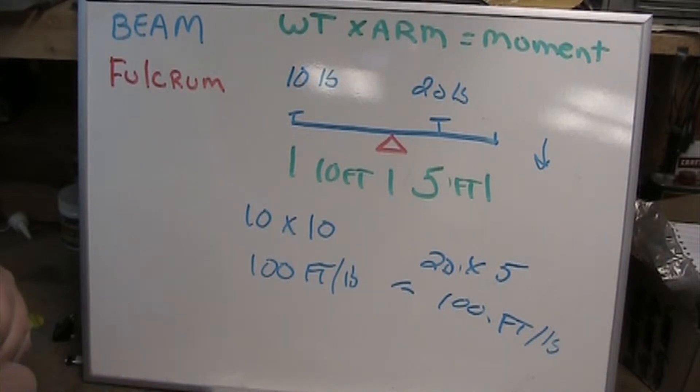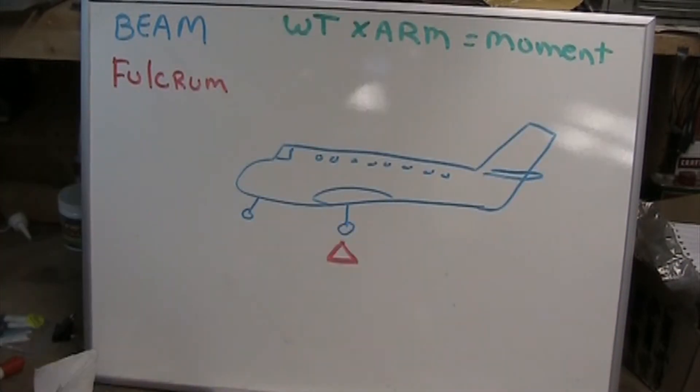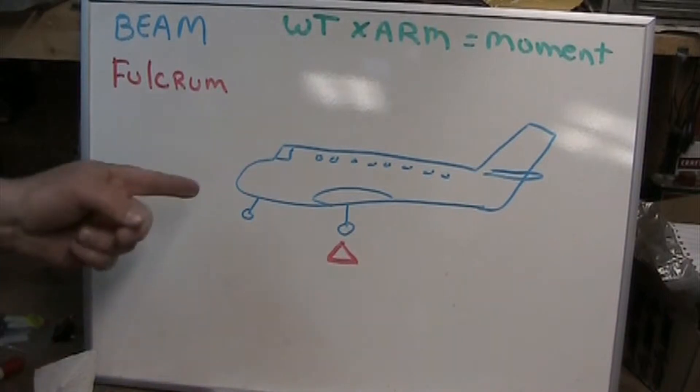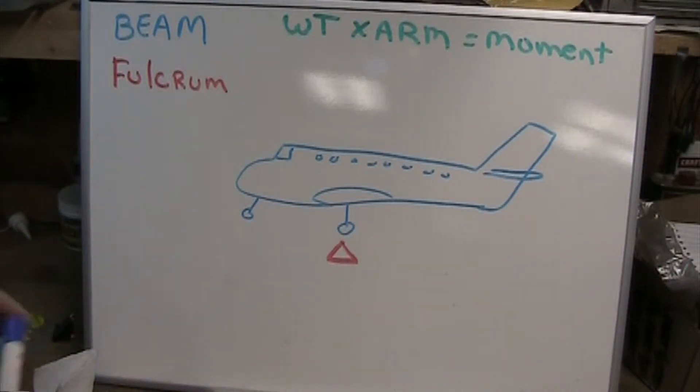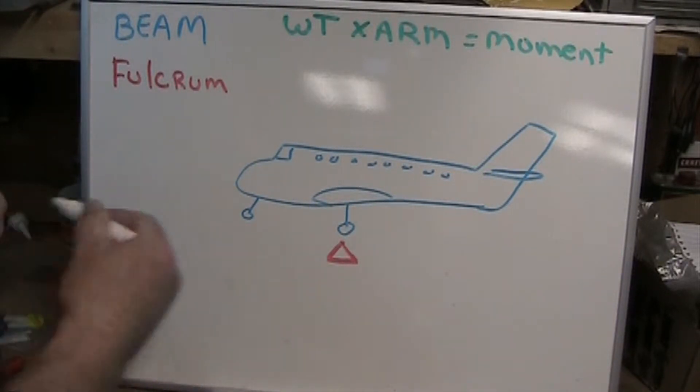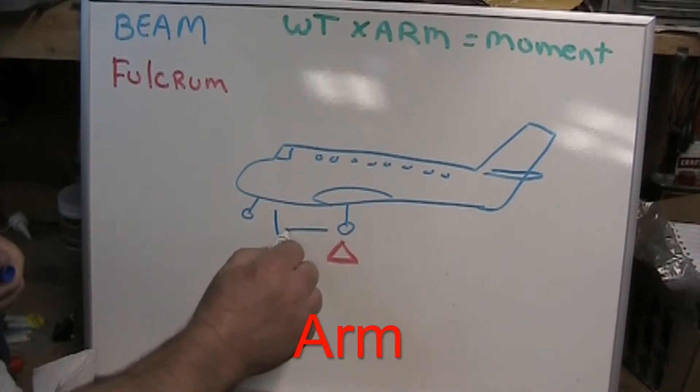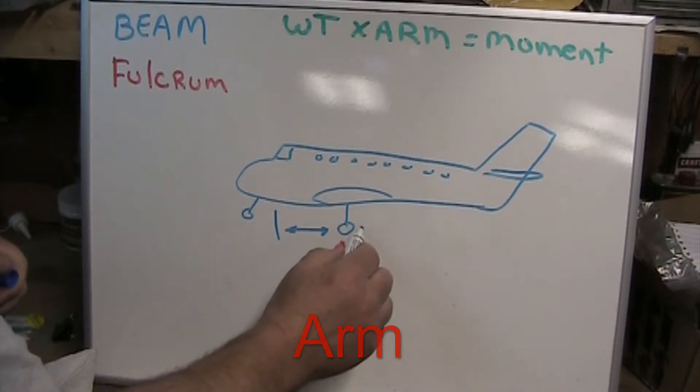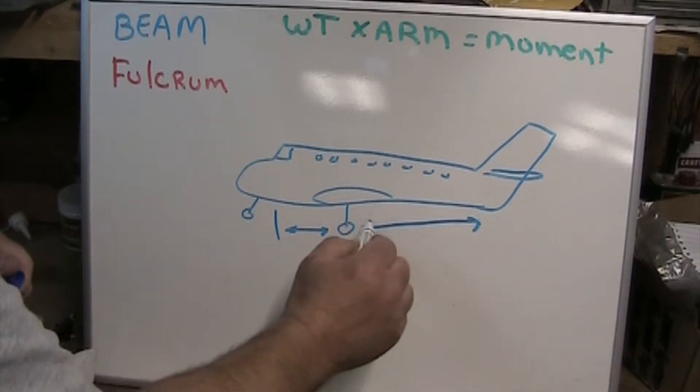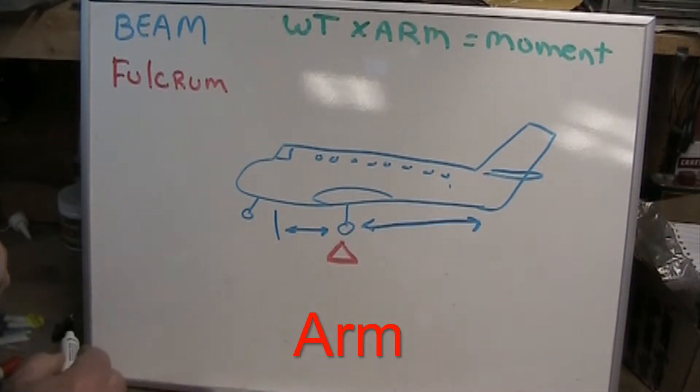You got your basic airliner right here and you can see under the main landing gear I've got the fulcrum. I get this question a lot: how come they board the front first? The reason for this is that you've got a fairly short beam between the fulcrum and the nose, and a fairly large beam towards the back seats.